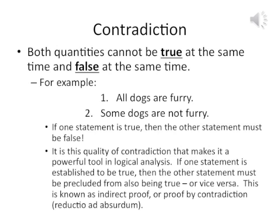One thing has to apply, and only one thing has to apply — that's the nature of contradiction. It's very different from contraries and subcontraries, where statements could coexist either both being true or both being false. With contradiction, you can't have both statements being true or false at the same time — it has to be one or the other.